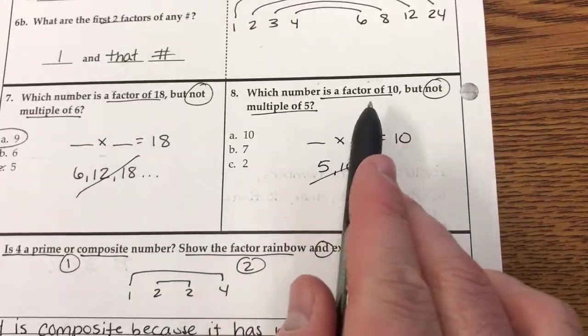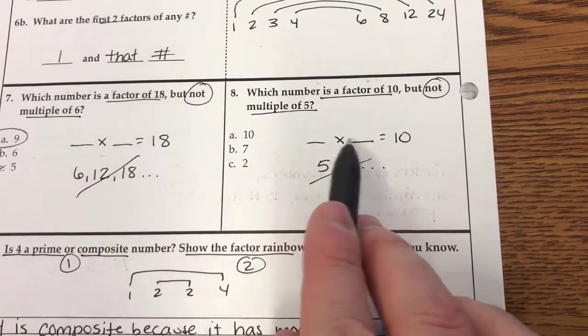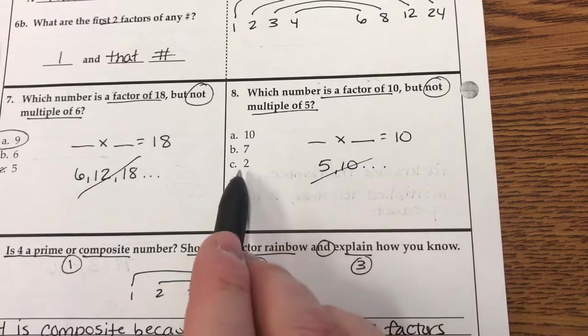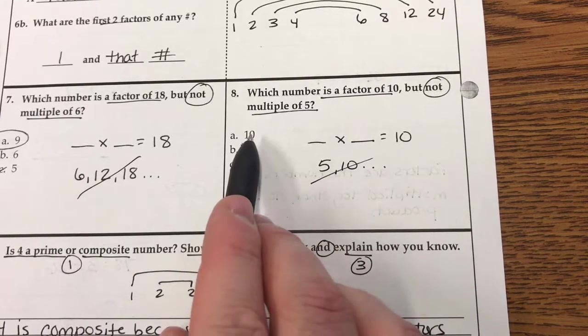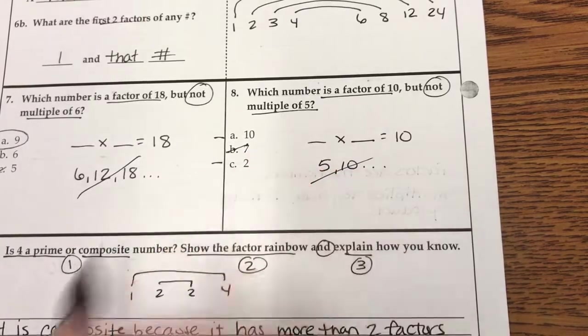Okay? Which number is a factor of 10 but not a multiple of 5? So factors of 10. That's the one I'm focusing on first. So 2 is a factor of 10. And 10 is a factor of 10. But 7 is not. So that's gone. So it's between those two.